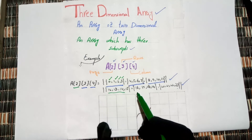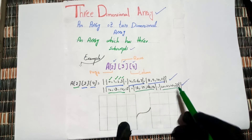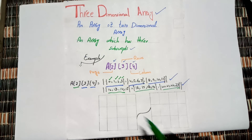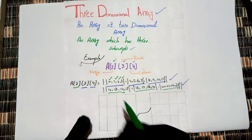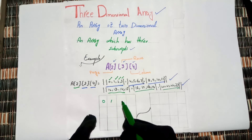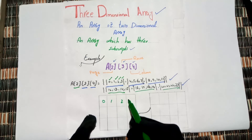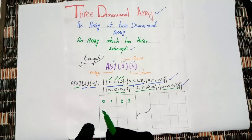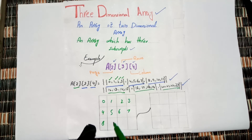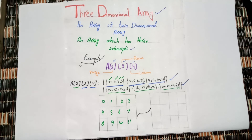In every row there are four columns. Now, how to represent this in memory. We start with 1, 2, 3, 4, 5, 6, 7, 8, 9, 10, 11 — here is our first array.